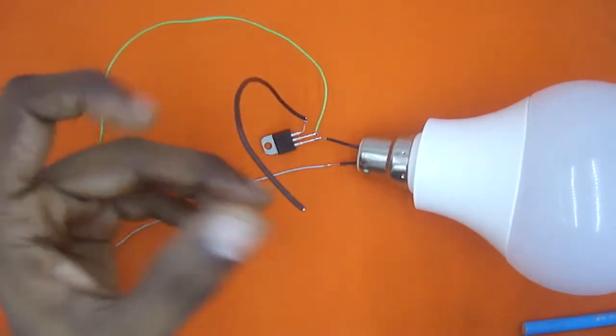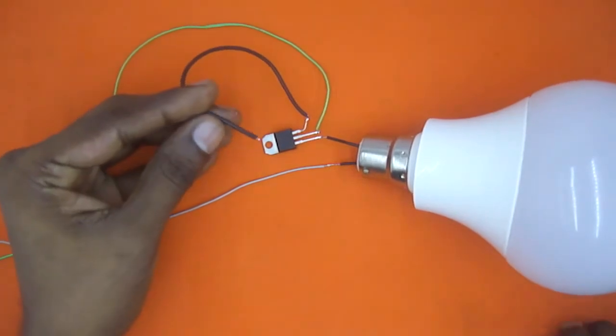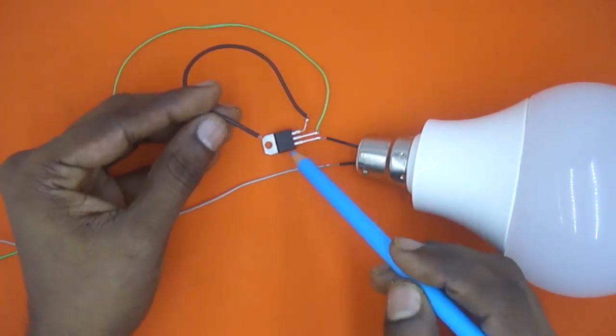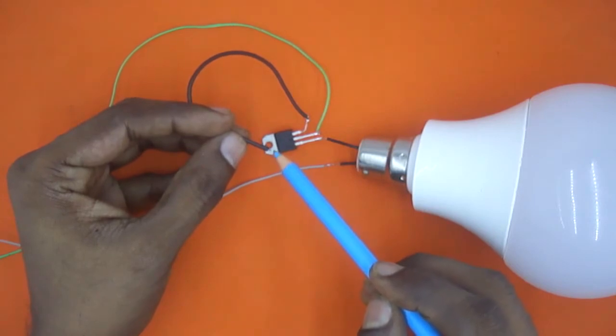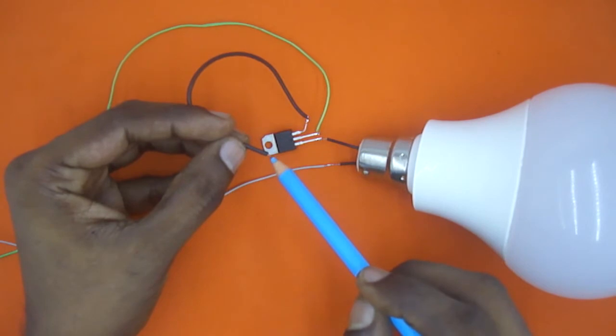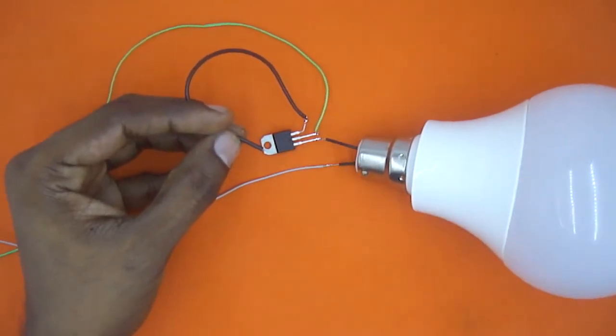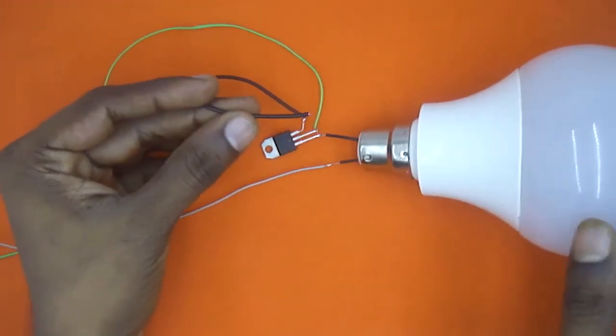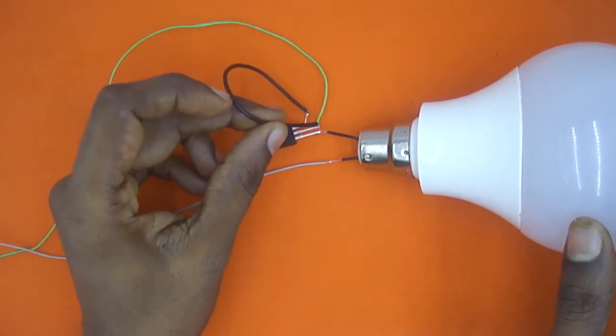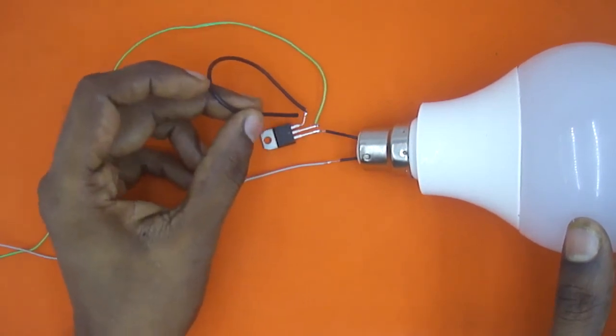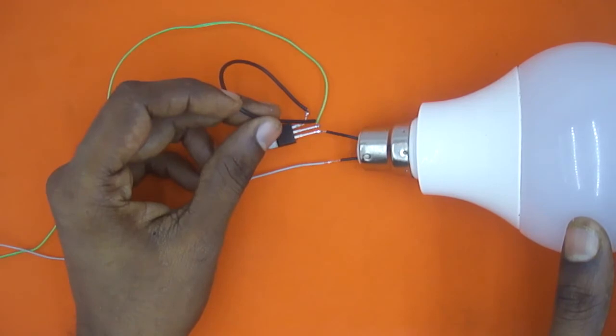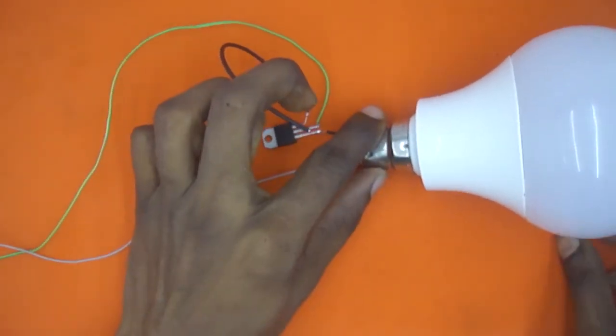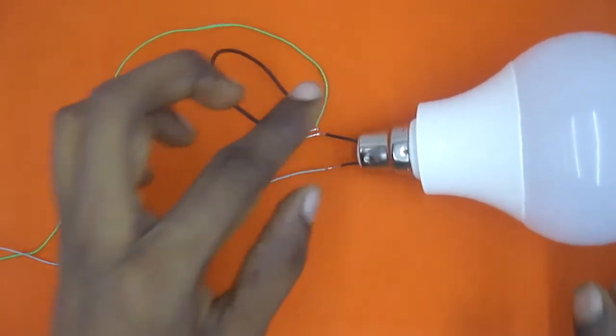Now this is the gate. The rule to activate this TRIAC is you need to give a small power supply to this pin, a current around 10 milliampere or a voltage of 1 to 1.5 volt. The simple way to give power supply to this is just connect it to T2. Whenever you will connect it to T2, the pin will automatically get some power supply and the bulb will glow. So let's give power supply and check it.